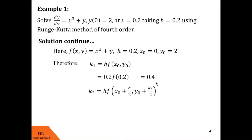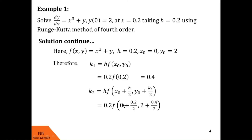Now we find k₂, defined as h·f(x₀ + h/2, y₀ + k₁/2). x₀ = 0 and h = 0.2, so x₀ + h/2 = 0 + 0.1 = 0.1. Similarly, y₀ + k₁/2 = 2 + 0.4/2 = 2.2. After simplifying, we get k₂ = 0.4402.